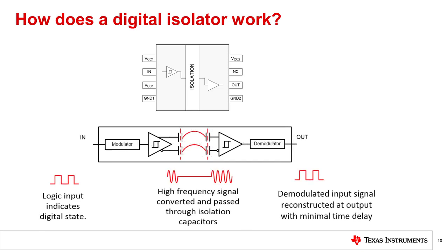The input signal is modulated through a transmit IC and then passed through a high voltage capacitive barrier and across the connecting bond wire to the receiving side IC. Ideally, digital inputs and outputs are identical when an input signal is applied. Digital isolators are most commonly used with isolated power supplies in separate grounds, which is also useful in preventing ground interference and noise currents from power supplies.